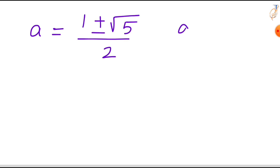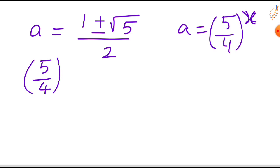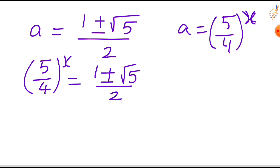We consider a = (5/4)^x, so (5/4)^x = (1 ± √5) / 2. Now take logarithm on both sides: log[(5/4)^x] = log[(1 + √5) / 2], taking only the positive value.